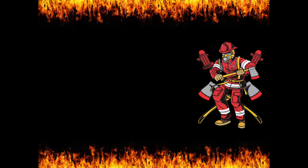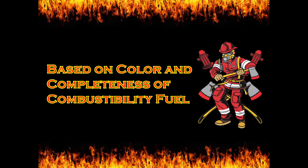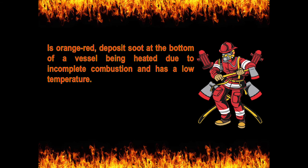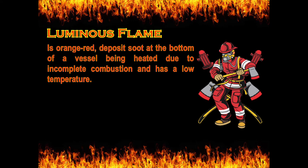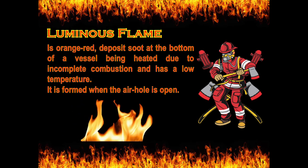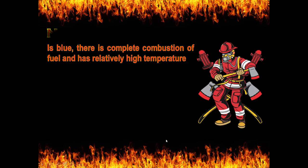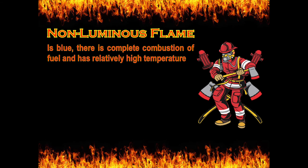Next would be the types of flames. Based on color and completeness of combustion of fuel: first is luminous flame — orange-red in color, deposits soot at the bottom of a vessel being heated due to incomplete combustion, and has a low temperature. It forms when the air hole is open. Non-luminous flame is blue in color, has complete combustion of fuel, and has a relatively higher temperature. It forms when the air hole is closed.